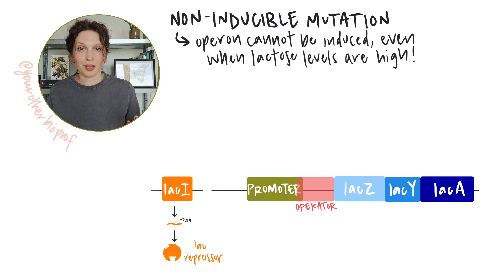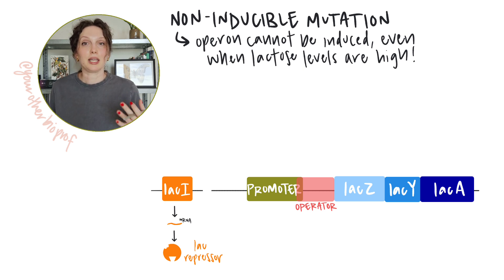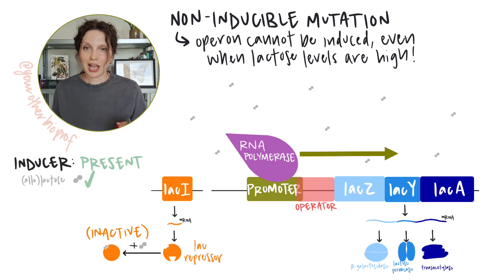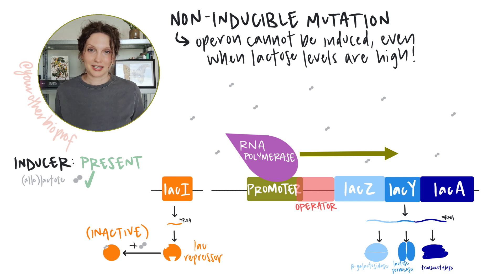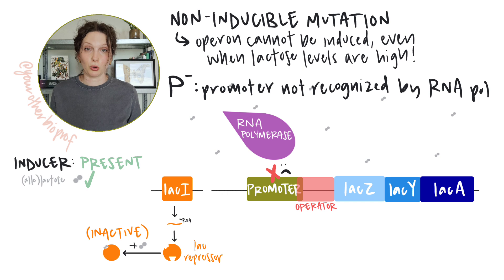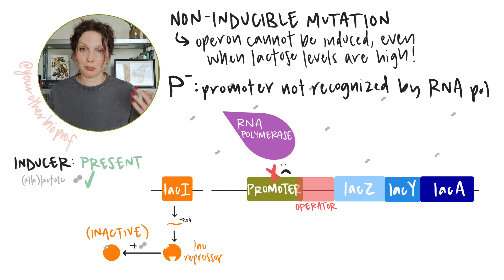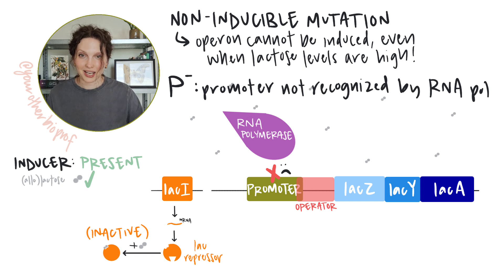The lac operon is an inducible operon. Its default state is off, but it can be induced — transcription can be turned on — when lactose is available. However, there are some mutations that make it so the lac operon cannot be induced, even if there's plenty of lactose. P- indicates a mutation in the promoter, meaning the promoter sequence has been altered such that RNA polymerase isn't going to recognize and bind to it to initiate transcription, even if there's no repressor blocking the operator.